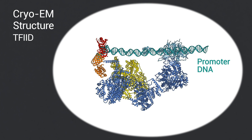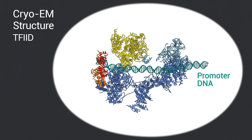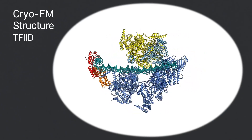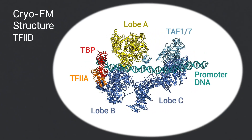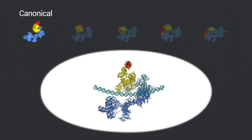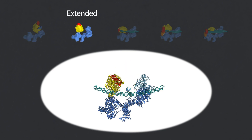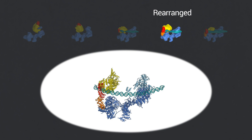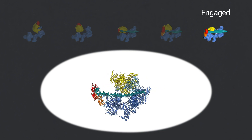We also define the conformational landscape of TF2D in the process of TBP loading onto promoter DNA in the presence of TF2A. Our analysis reveals five distinct structural states, showing how the initial binding of TF2D to the downstream promoter DNA positions the upstream DNA and facilitates scanning of TBP for a TATA box and the subsequent full engagement of the promoter.